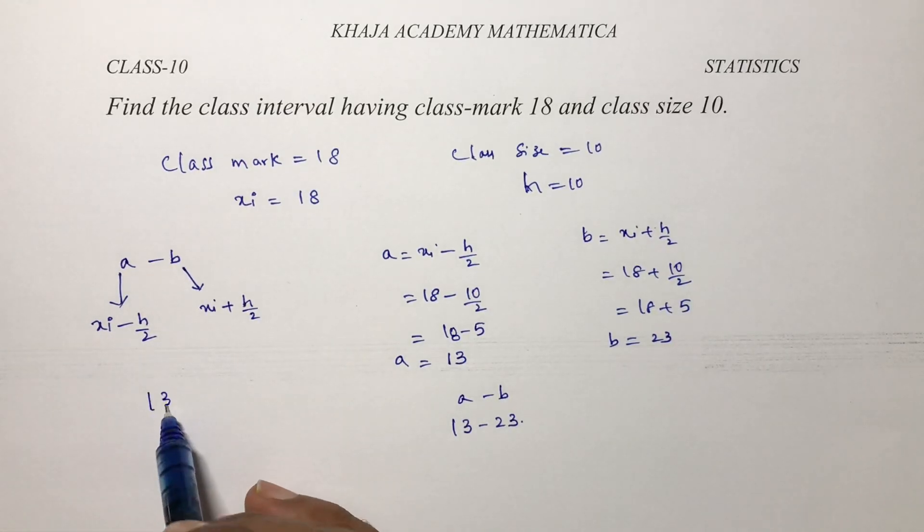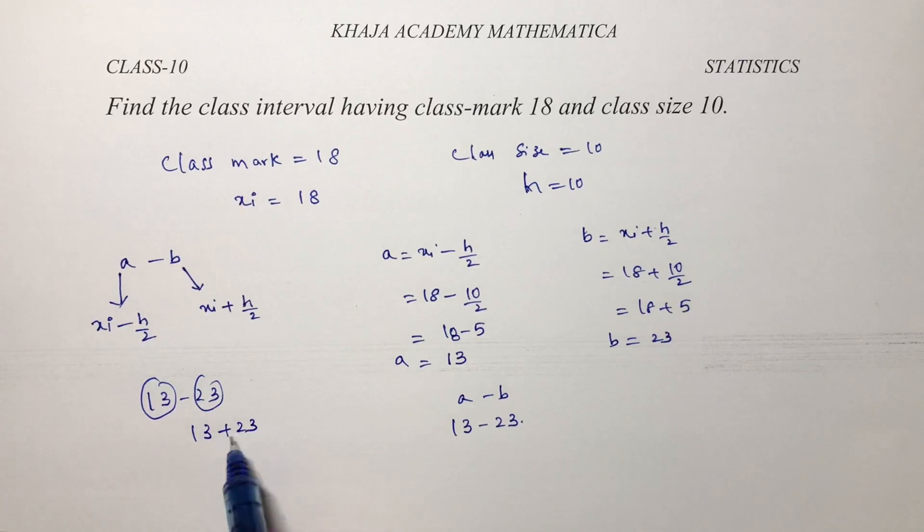Now see, suppose if they give the class 13 to 23 to find class mark, we will add these both values and make it half. So 13 plus 23 by 2, that is 36 by 2, will get 18.